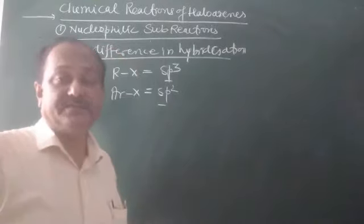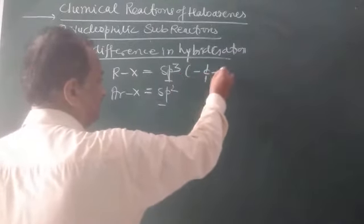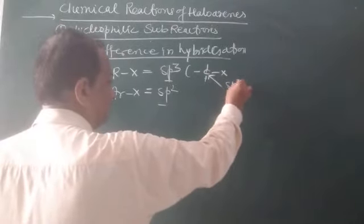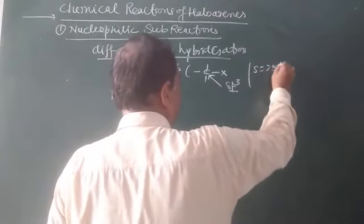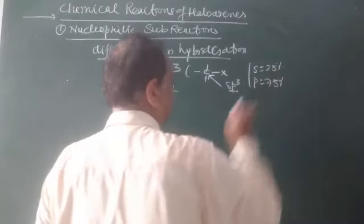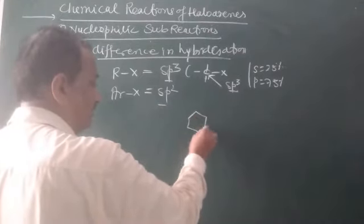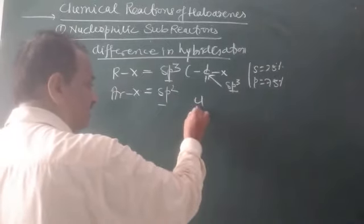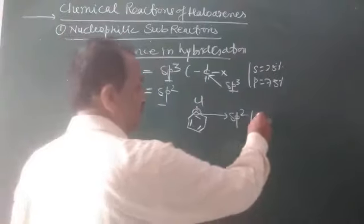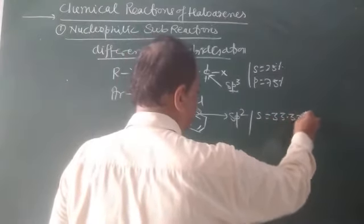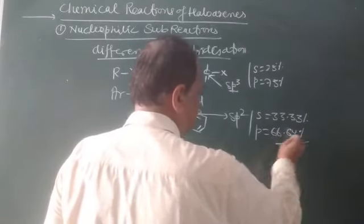Another factor is the difference in hybridization. In haloalkanes, the carbon bearing the halogen is sp3 hybridized, with S-character = 25% and P-character = 75%. But in haloarenes, the carbon bearing the halogen is sp2 hybridized, with S-character ≈ 33.33% and P-character ≈ 66.67%. Since S-orbitals are closer to the nucleus, the C-X bond in haloarenes is stronger than in haloalkanes.